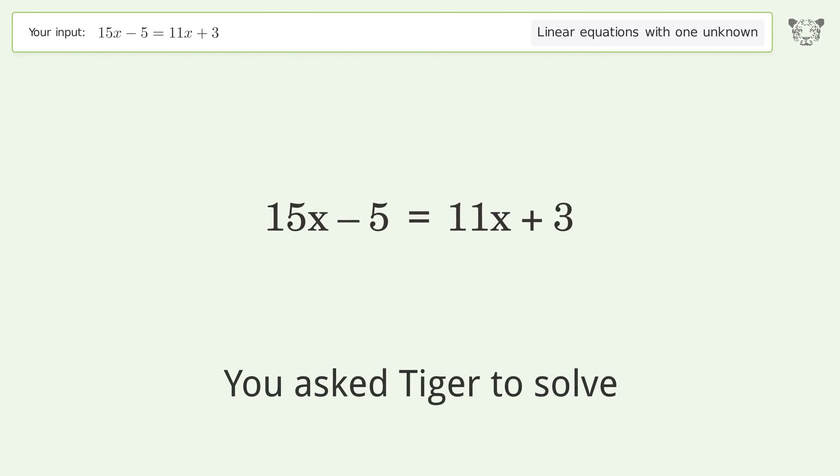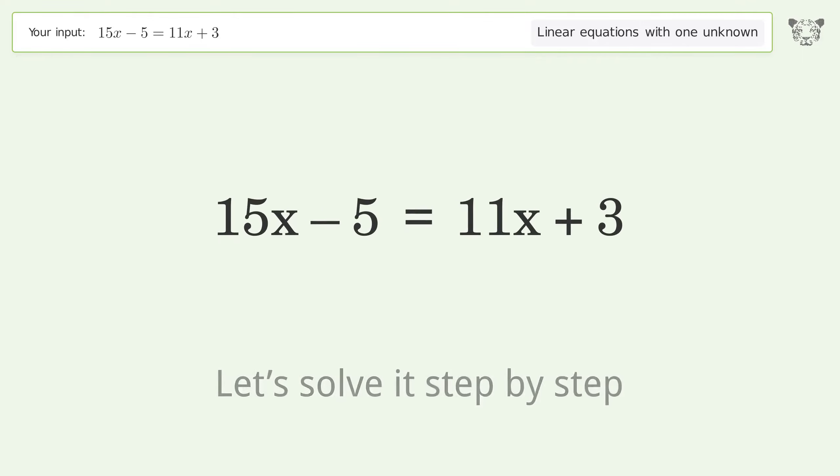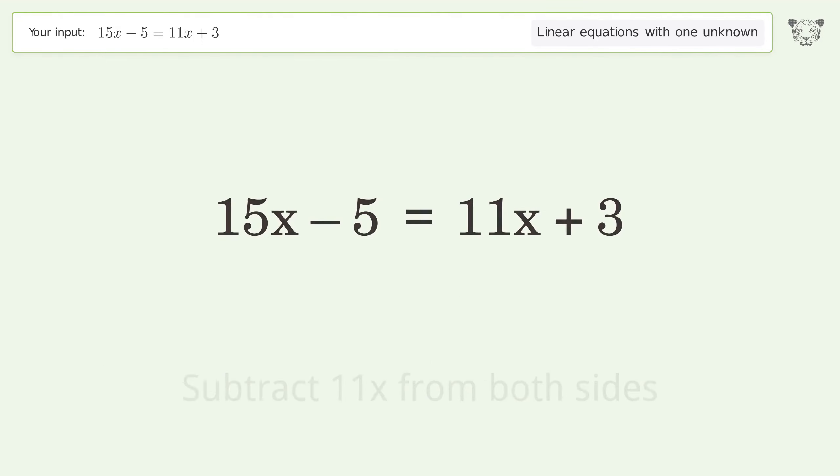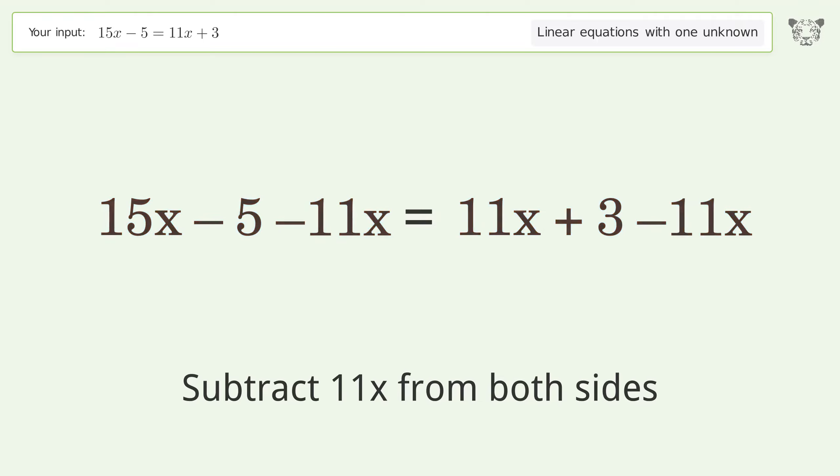You asked Tiger to solve this. This deals with linear equations with one unknown. The final result is x equals 2. Let's solve it step by step. Group all x terms on the left side of the equation. Subtract 11x from both sides. Group like terms.